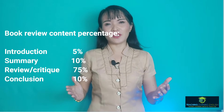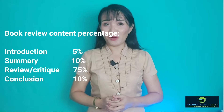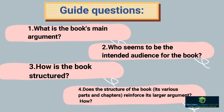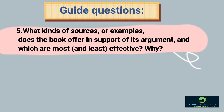As mentioned earlier, there is no uniform template or guide questions. But to give you an idea of the structure of a book review: your introduction should comprise only 5%, the summary should be 10%, the critique or review should be 75%, and the conclusion is 10%, totaling 100%. There are many guide questions you can find, but here are a few highly analytical ones: What is the book's main argument? Who seems to be the intended audience? How is the book structured, and do its various parts and chapters reinforce its larger argument? What kinds of sources or examples does the book offer in support of its argument, and which are most or least effective?